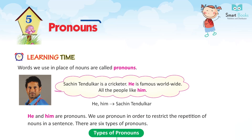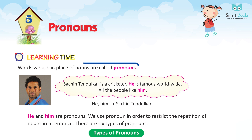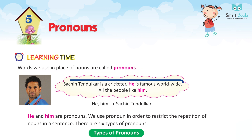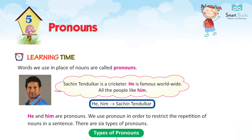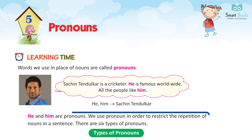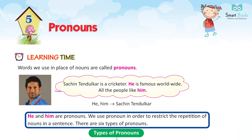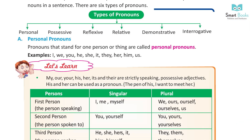Chapter 5: Pronouns. Learning time — words we use in place of nouns are called pronouns. Sachin Tendulkar is a cricket player. He is famous worldwide. All the people like him. Here, 'he' and 'him' stand for Sachin Tendulkar — these are pronouns. We use pronouns in order to restrict the repetition of nouns in a sentence.